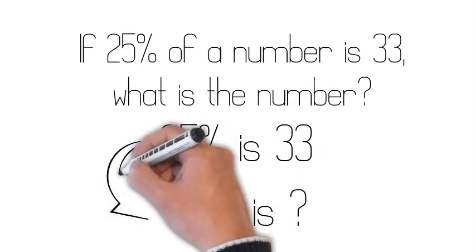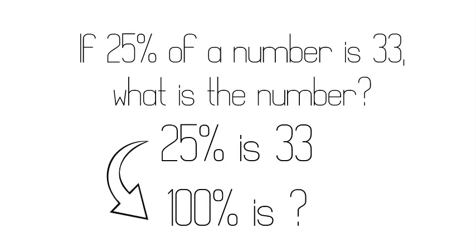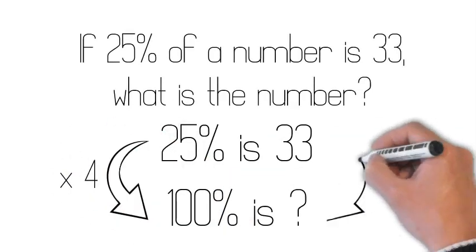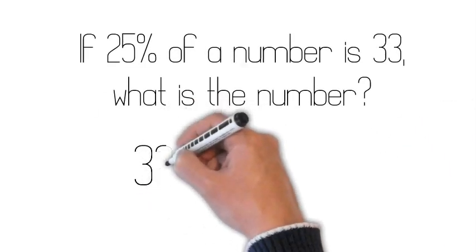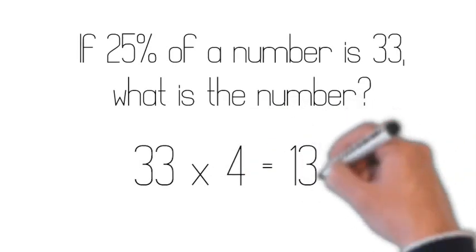So how do we get from 25% to 100%? We times by 4. But whatever we do to one side, we have to do to the other. So here's our answer: 33 times 4 is 132.